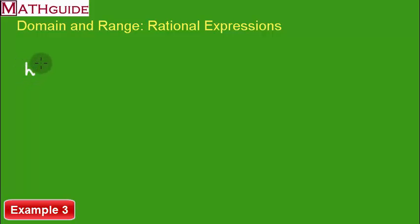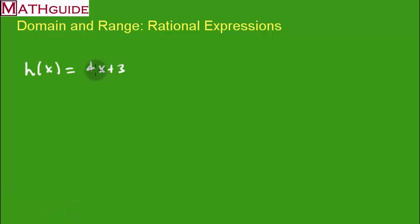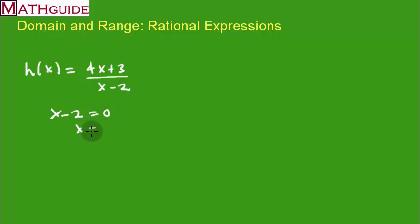Here's our final example: 4x plus 3 all over x minus 2. Setting the denominator equal to 0 gives x equals 2, which is our vertical asymptote. This function has only one vertical asymptote.